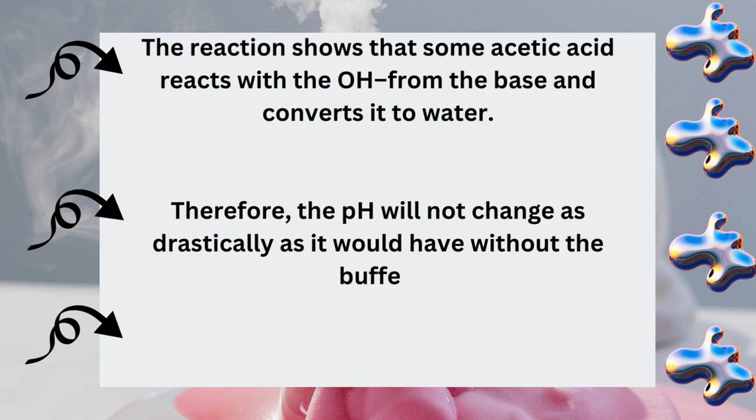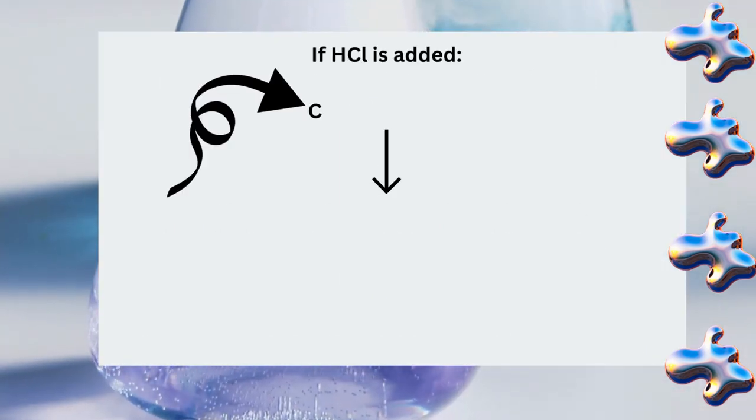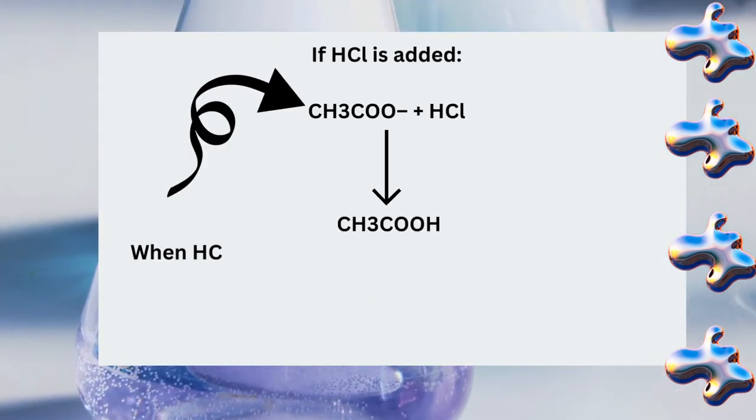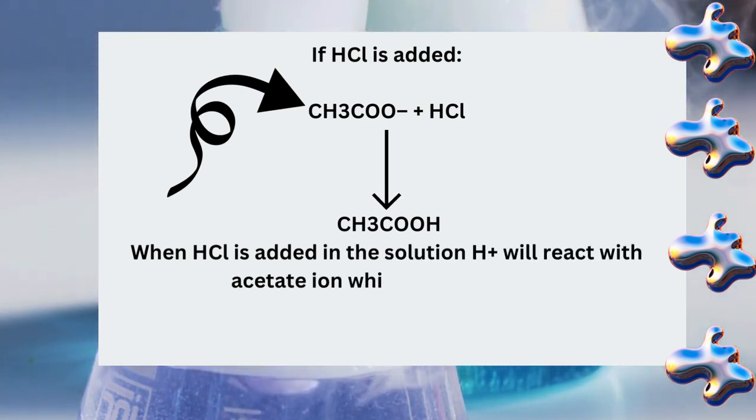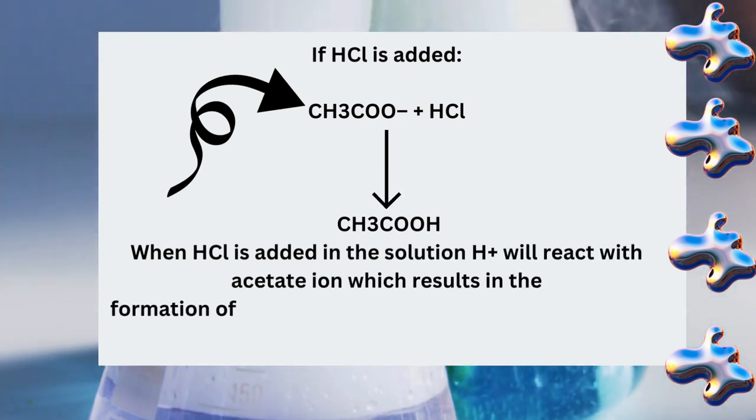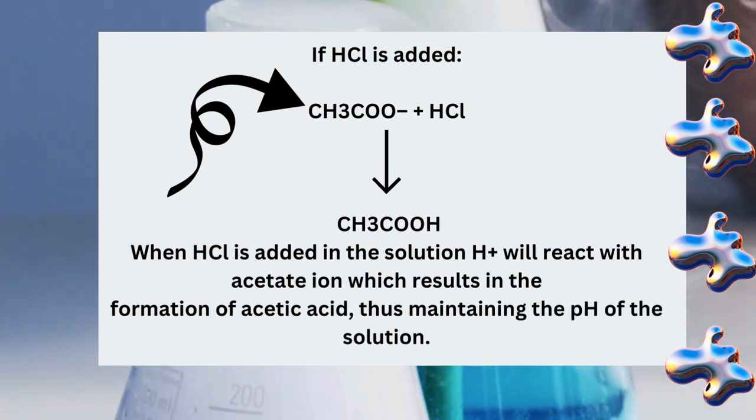Sodium acetate ionizes completely, providing the acetate ion CH3COO-. If HCl is added: CH3COO- plus HCl gives CH3COOH. When HCl is added in the solution, H+ ion will react with acetate ion, which results in the formation of acetic acid, thus maintaining the pH of the solution.